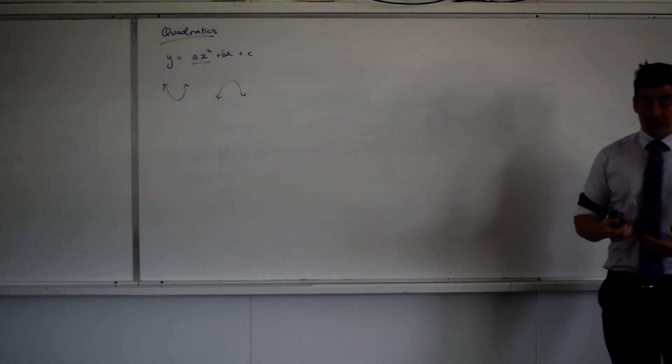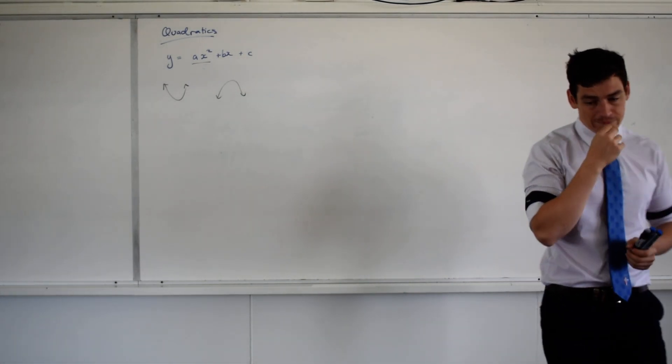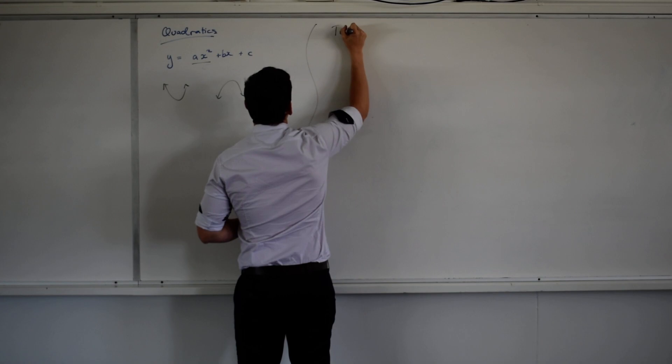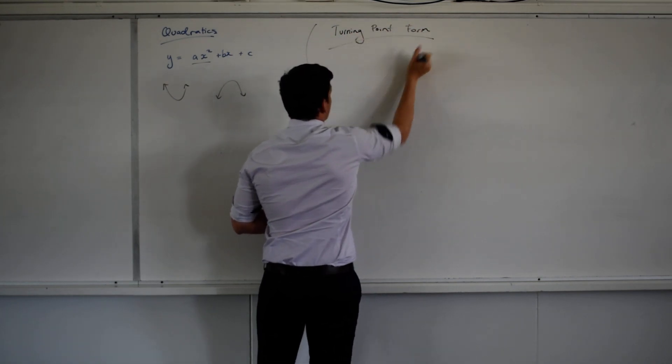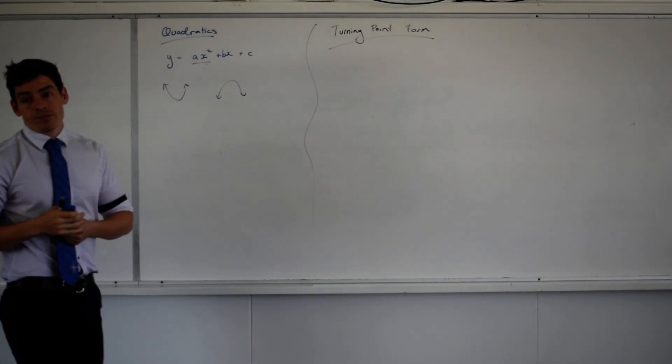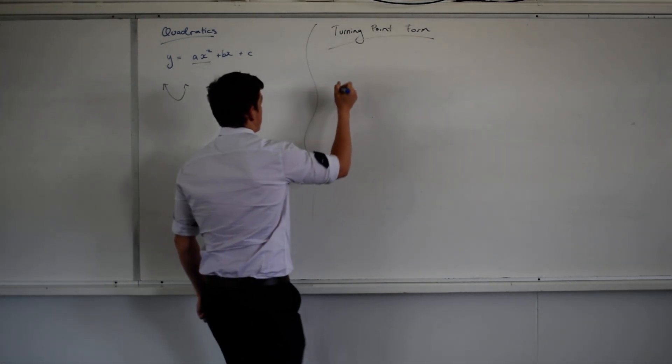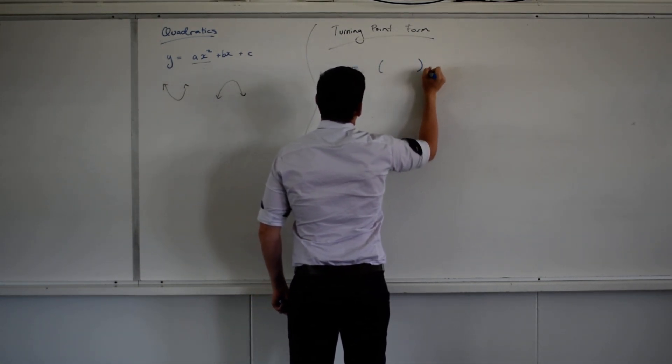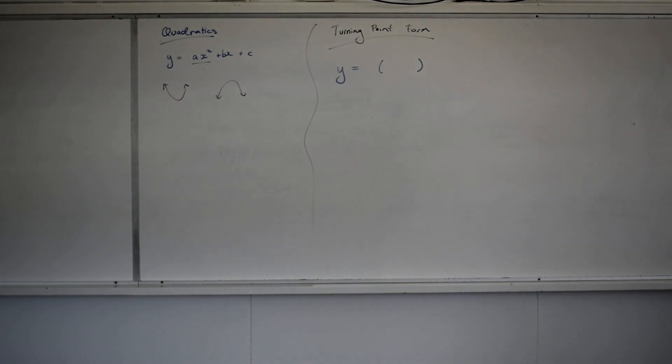So we're going to look today at two forms of the quadratic. We've actually seen the third form we're not going to look at today. Now the first form of the quadratic is turning point form. I want you to have a crack at writing what you think this form might look like. You have seen it before.